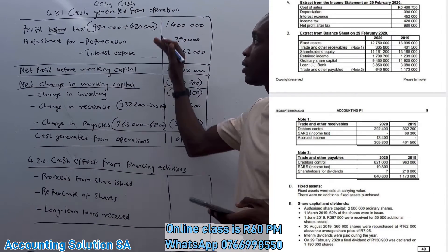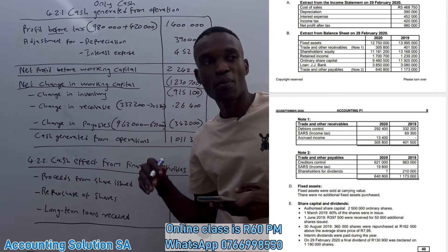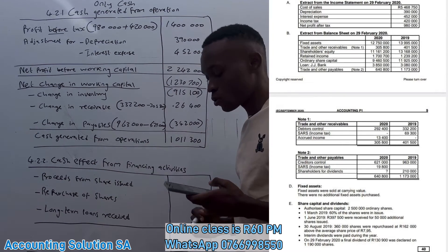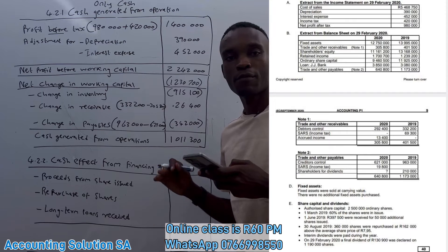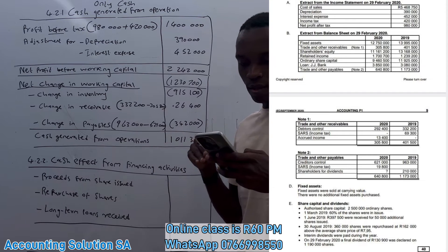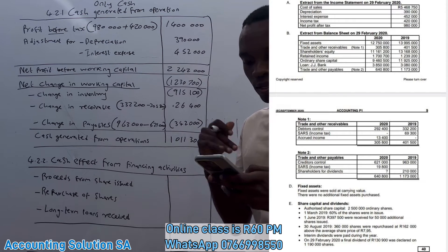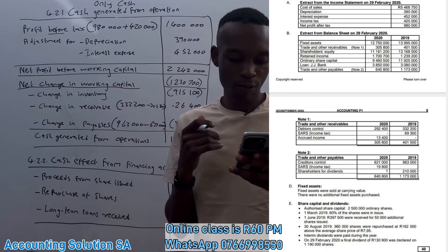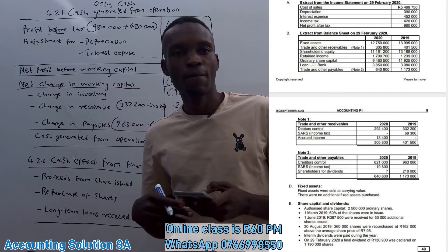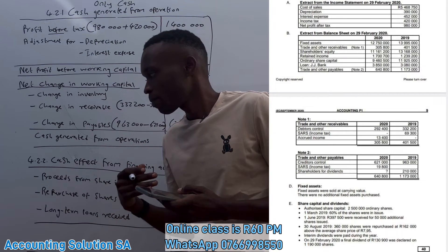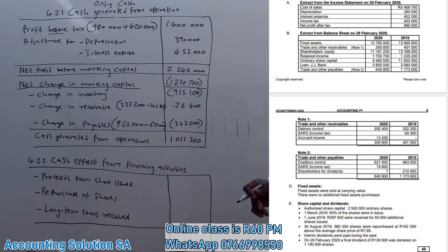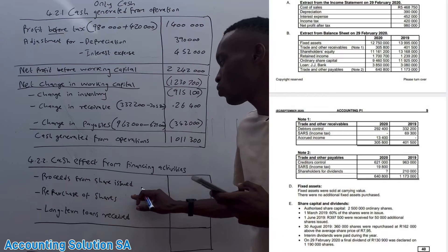Adding the working capital total to the net profit before working capital gives a final amount of positive 1,011,300. That's how you prepare the cash generated from operations note. We will also cover income tax paid, dividends paid, and proceeds from fixed assets in another video.